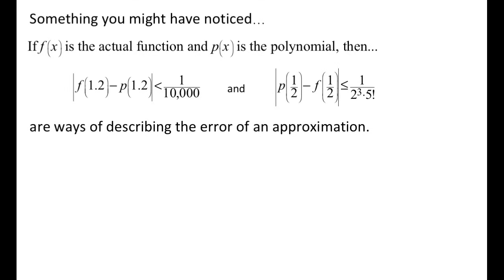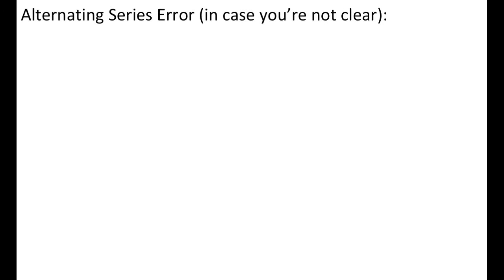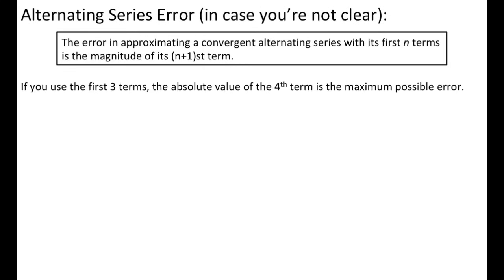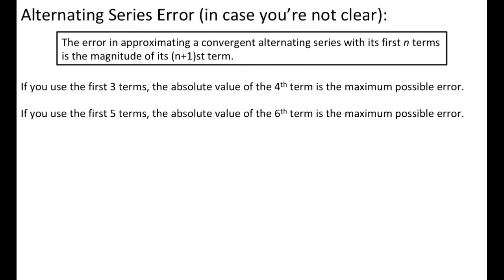Now, alternating series error: the error in approximating a convergent alternating series with its first n terms is the magnitude, or absolute value, of its n+1 term. So if you use the first three terms to approximate the value, the absolute value of the fourth term is the maximum possible error. If you use five terms, the absolute value of the sixth term would be the error. This is the easier of the two to use.